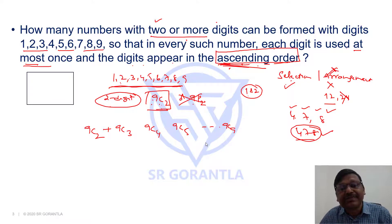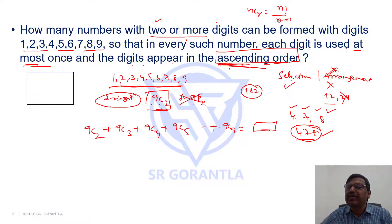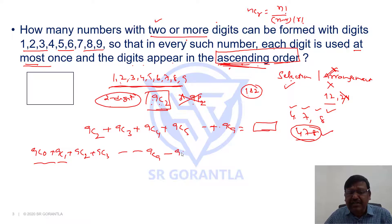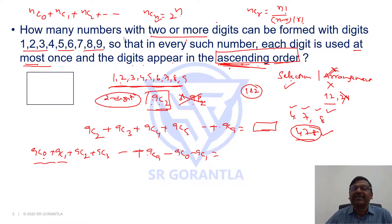We can even use all nine digits, giving 9C9. The total is 9C2 + 9C3 + ... + 9C9. Rather than computing each term individually, we add 9C0 and 9C1 to get the full sum 9C0 + 9C1 + 9C2 + ... + 9C9, then subtract them back. Using the formula nC0 + nC1 + ... + nCn = 2^n, this sum equals 2^9.